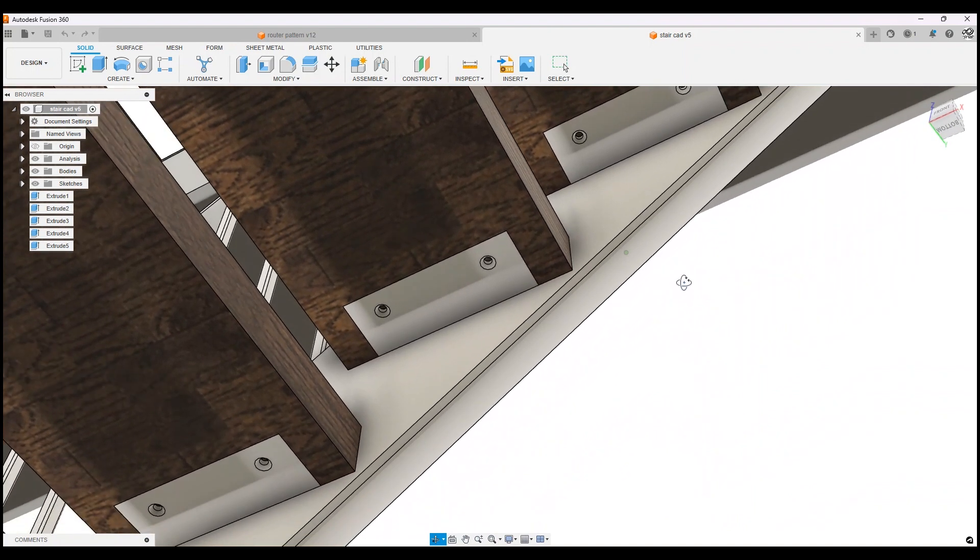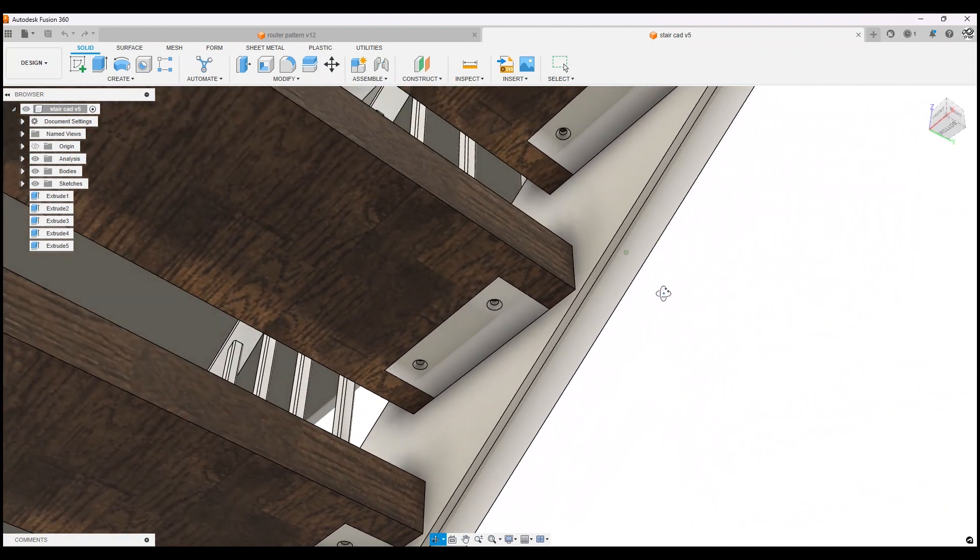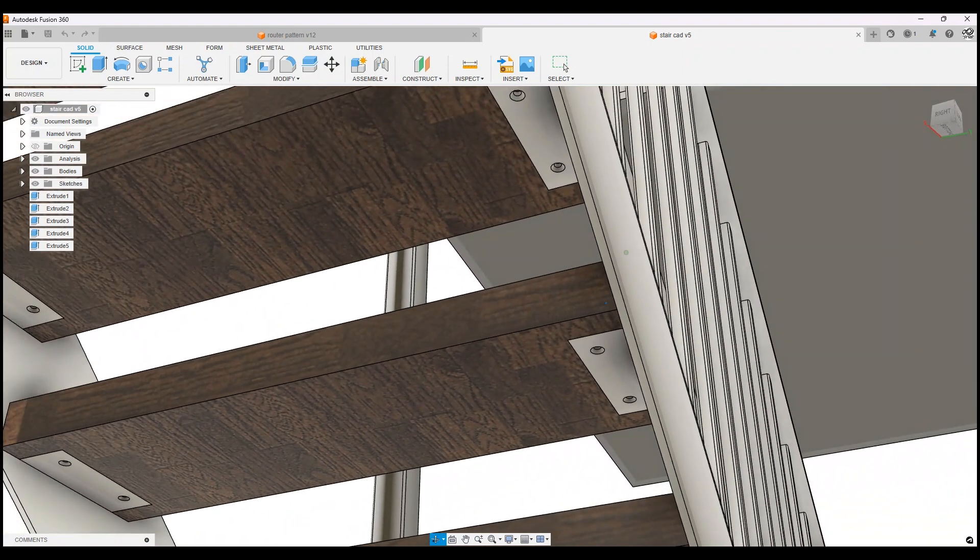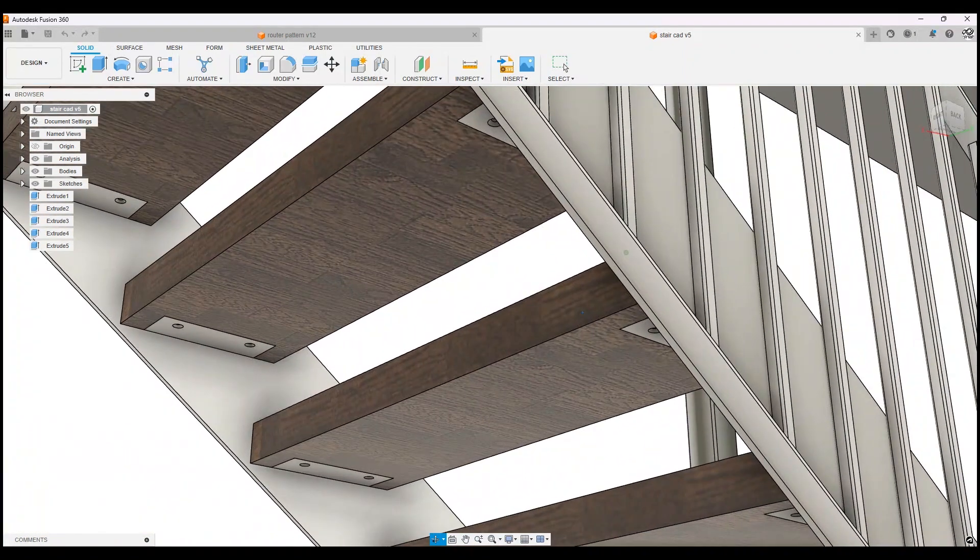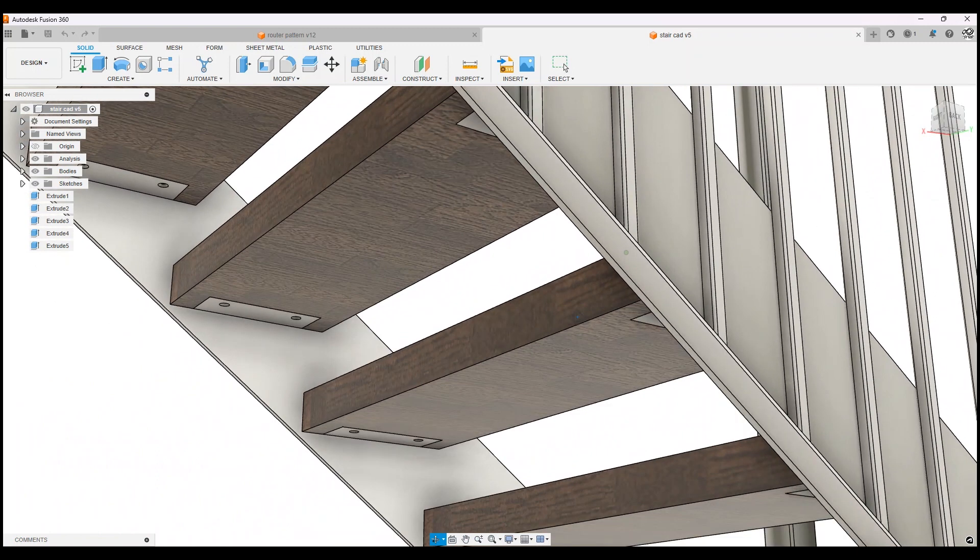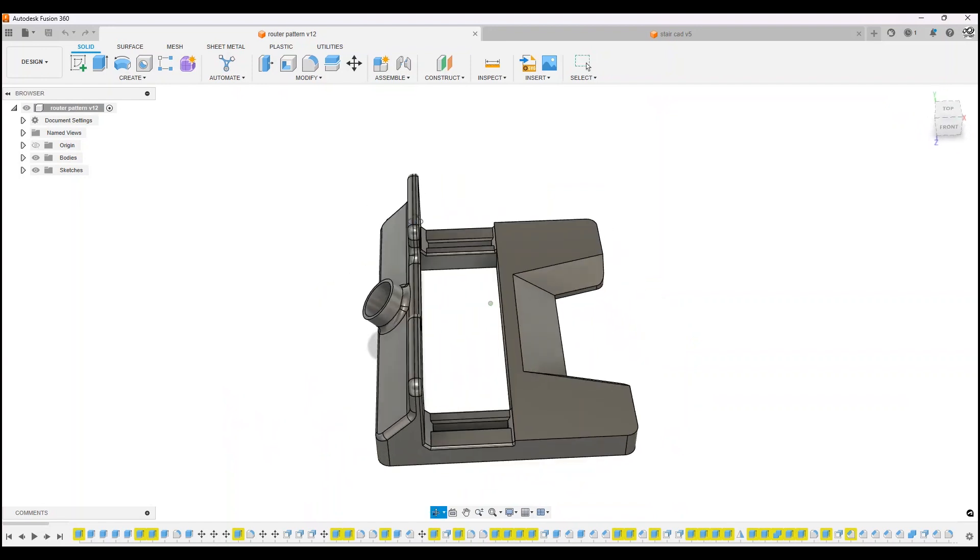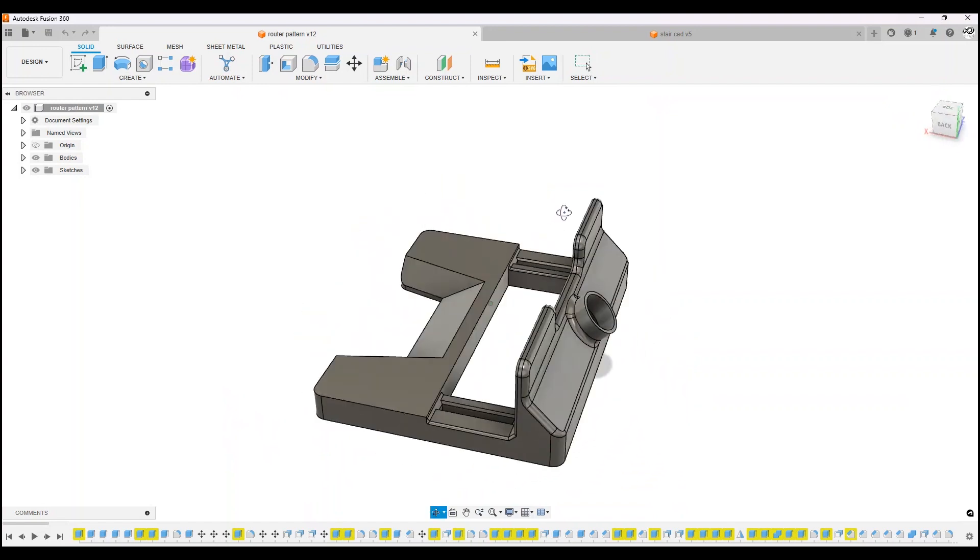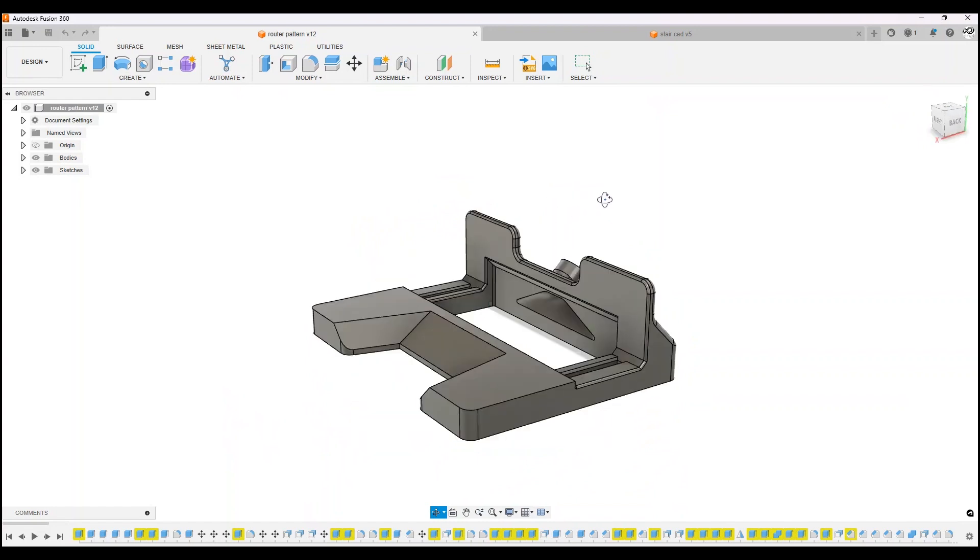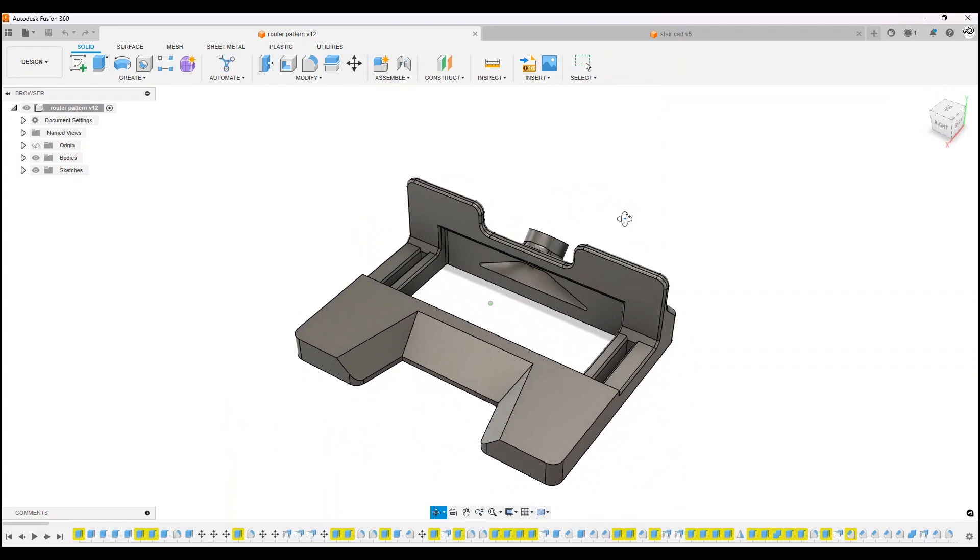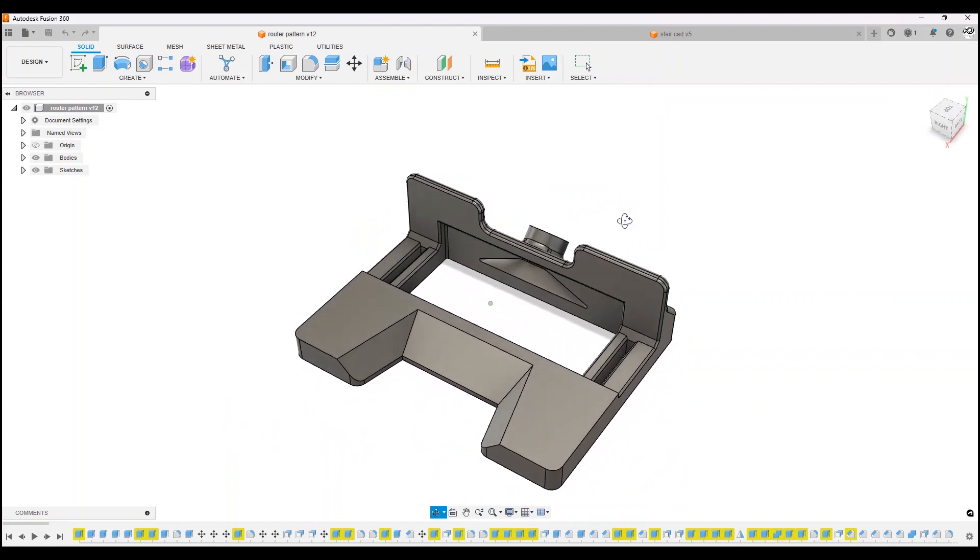Because of the amount of repetitive cutting I had to do for all the timber treads, I decided to 3D print a jig that I could use to help me route all the timber treads exactly how I want it to be. This is basically what we call a jig in the industry, a template or pattern that you can use repetitively to help make your work easier.